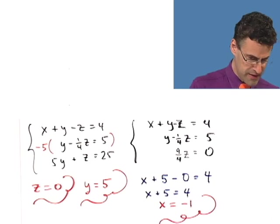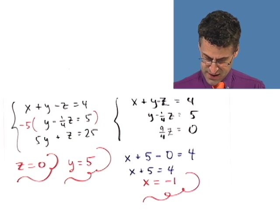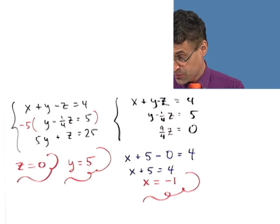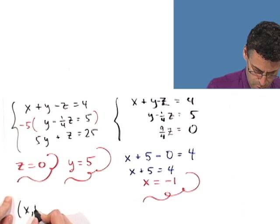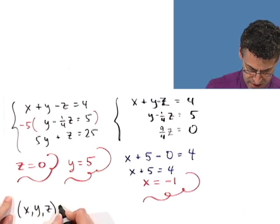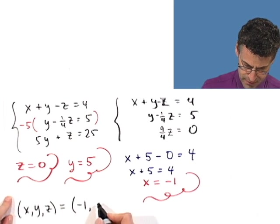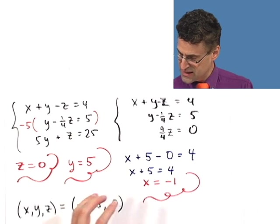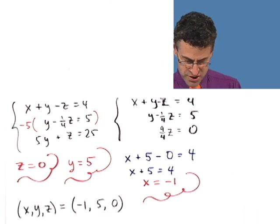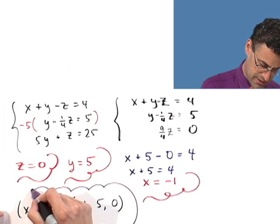Now, we have to record the answer as an ordered triple. And remember, the order matters. And even though we solved it this way, that's backwards. The way we want to represent it is x, y, and z always. That's the ordered triple, which in this case will be negative 1, 5, and 0. That is the answer. There's exactly one solution to the system. So we see it's consistent and independent.